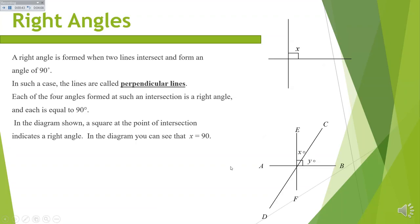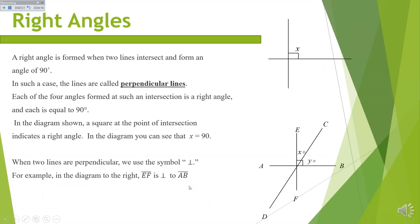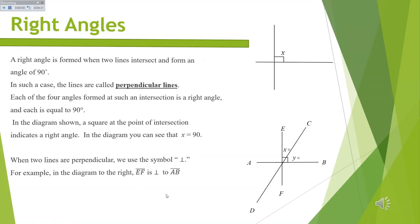Let's look at this diagram. In geometry we want to always fill in everything we know before we get too carried away. We've got two lines that are perpendicular — we use this symbol to tell us that EF is perpendicular to AB.